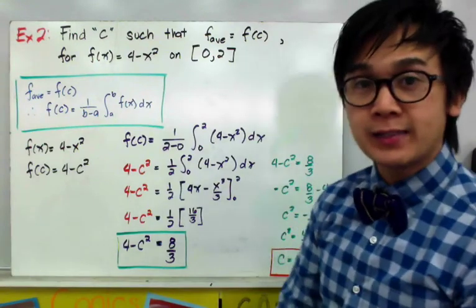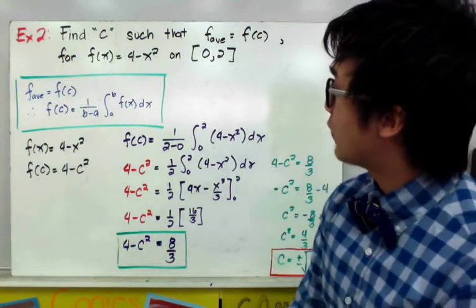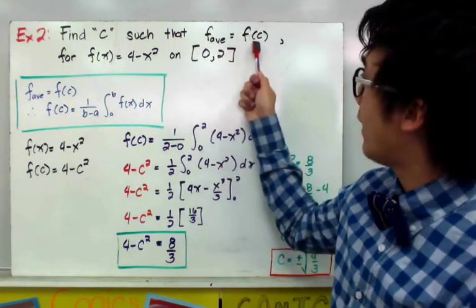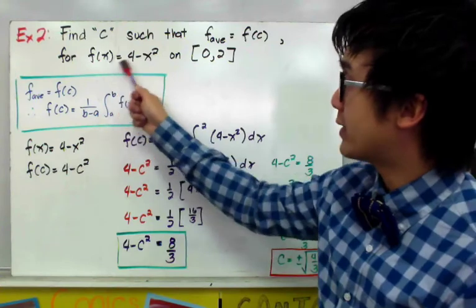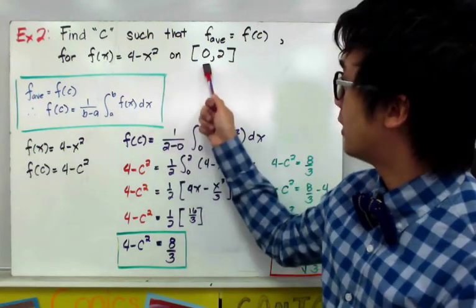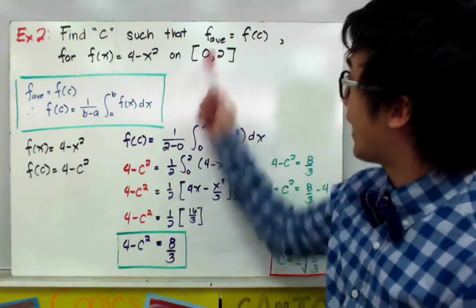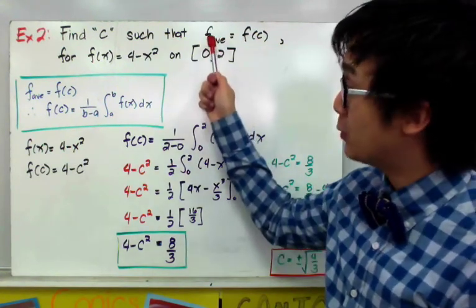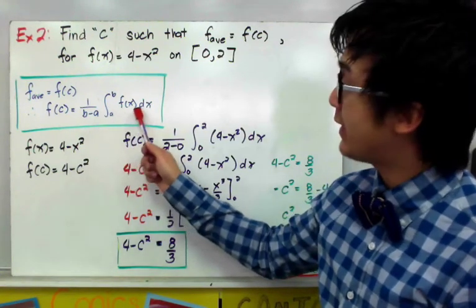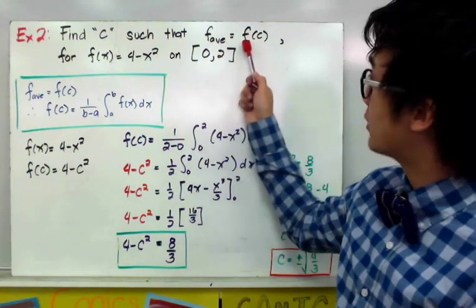For the second example, we're going to find the constant c. Let's find c such that f average is equal to f of c, for f of x equal to 4 minus x squared on the closed interval 0 and 2. The formula for finding f average is 1 over b minus a times the integral of f of x dx from a to b, and we know that f average is equal to f of c.